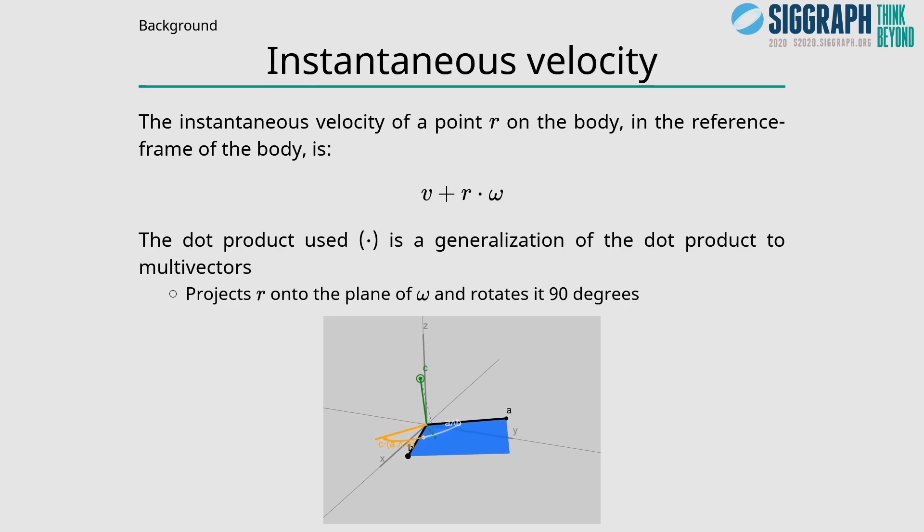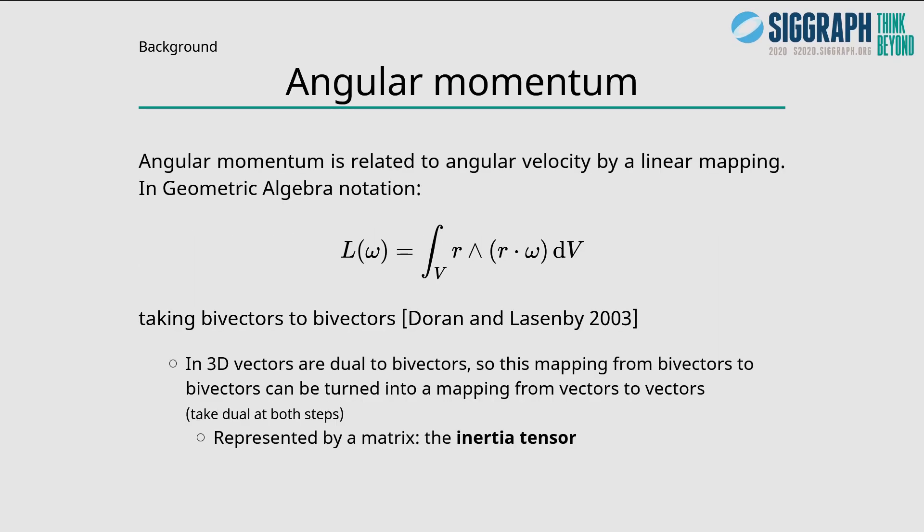The instantaneous velocity of a point r on the body in the reference frame of the body is v plus r dot omega. But here this dot product is a generalization to multi-vectors, in this case between a vector and a bivector. It projects the vector r onto the plane of the bivector omega and rotates it by 90 degrees. Angular momentum is related to angular velocity by a linear mapping, and in geometric algebra notation, it takes bivectors to bivectors.